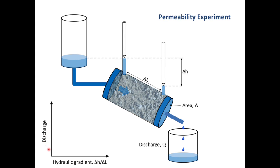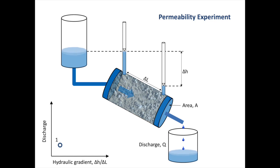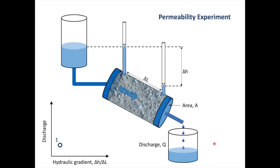We can plot the discharge against the hydraulic gradient on the chart on the left. Remember, the hydraulic gradient is delta H divided by delta L, and you'll see we have a point which plots here. Now we're going to increase the head at the beginning of our tube. That means our hydraulic gradient is increasing and there's a corresponding increase in discharge. You'll see it falls a bit higher up on our graph because discharge has increased, as has the hydraulic head.